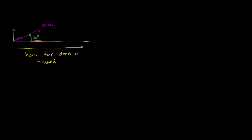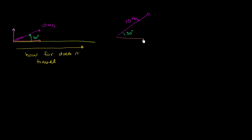The first thing we want to do is break down this velocity vector — which has a magnitude of 10 meters per second and an angle of 30 degrees with the horizontal — into its x and y components, or its horizontal and vertical components. So that's its horizontal component, and then its vertical component looks like this.